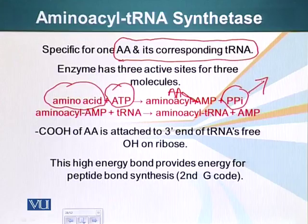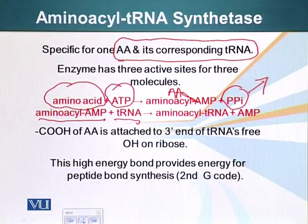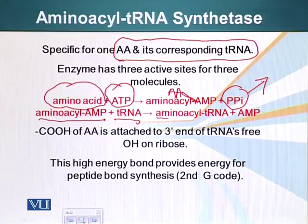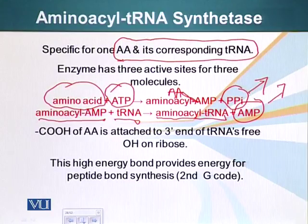This aminoacyl-AMP bond will ultimately be transferred to the tRNA in the second phase. The aminoacyl-AMP and tRNA come to this enzyme. This enzyme catalyzes the next reaction — it transfers the aminoacyl-AMP bond, making aminoacyl-tRNA, and AMP is released. So this tRNA now carries a particular amino acid.